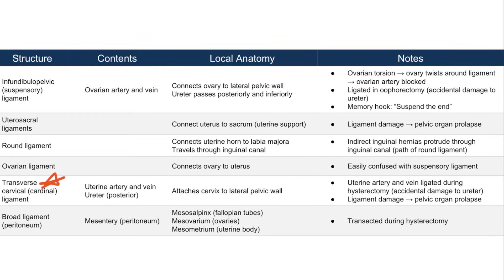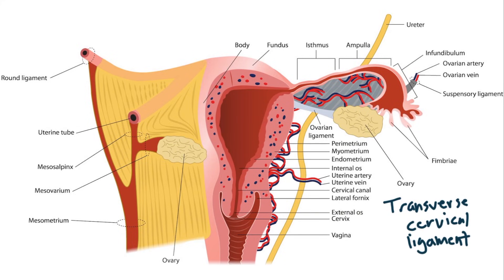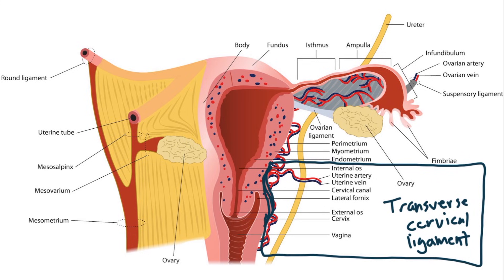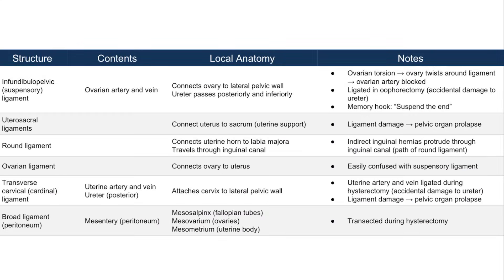Now let's talk about the transverse cervical or cardinal ligament. This ligament is important because it conducts the uterine artery and the vein. The transverse cervical ligament attaches from the lateral side of the uterus at the level of the cervix to the lateral pelvic wall. It contains the uterine artery, vein, and also the ureter. Since it conducts the uterine artery and vein, it's very important clinically — in a postpartum hemorrhage, these arteries can be targeted to stop the bleeding, and these arteries are also ligated during hysterectomy. Because the cardinal ligament contains the ureter, during ligation of the uterine artery and vein, there can accidentally be damage to the ureter.